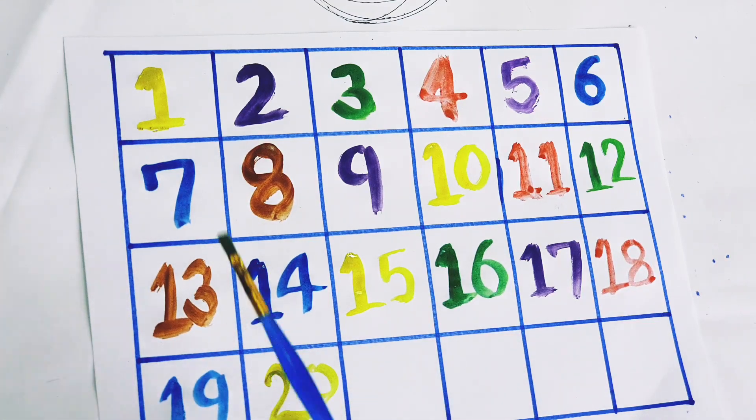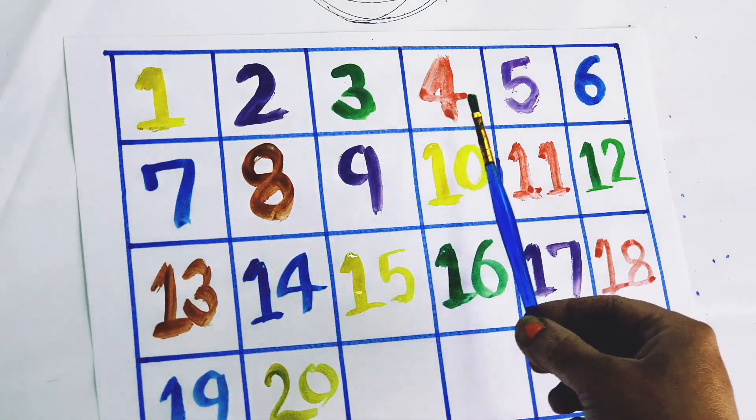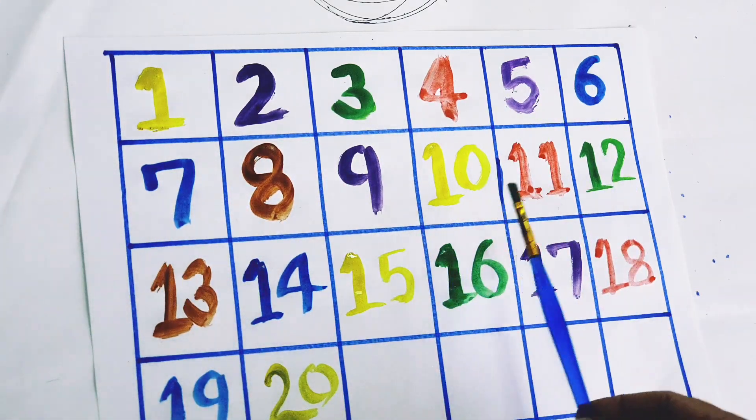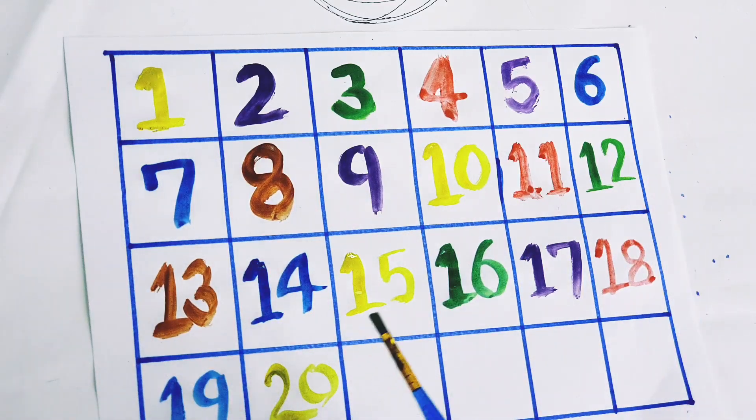So kids, what we learn today? 1, 2, 3, 4, 5, 6, 7, 8, 9, 10, 11, 12, 13, 14, 15, 16, 17, 18, 19, 20.